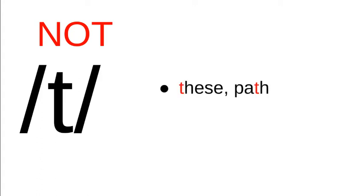We looked in the previous video at th sounds. They don't actually have a voiceless alveolar stop in them, so we don't use this character for them in phonetic transcription. For words like these and path, we use the symbols for the fricatives made at the teeth that we looked at in the previous video.